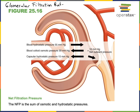Glomerular filtration rate, commonly abbreviated GFR, is the volume of filtrate produced per minute. GFR can range from about 80 to 140 milliliters per minute — typically a little higher in men than women — with an average of around 125 milliliters per minute for men and 105 milliliters per minute for women. GFR is a variable that can be regulated; we can increase or decrease it.